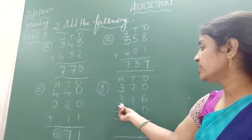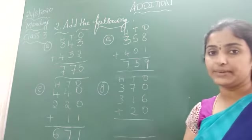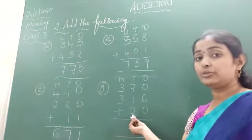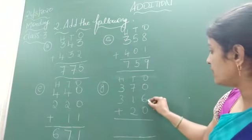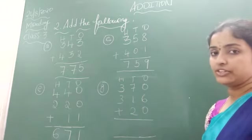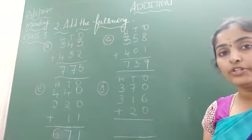Now come to the next one. Here in this one, 370, 316 plus 20. You are also up to tens place it is given. Now add the number: 0 plus 6 is how much? 6. 6 plus 0, how much you will get? 6.